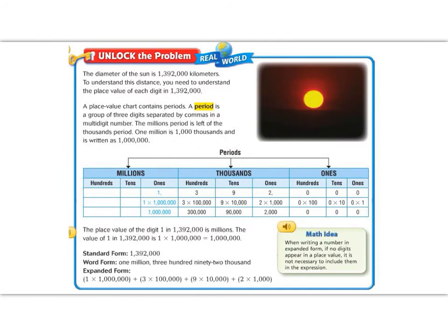Let's continue our flip lesson by opening our math books and looking at the unlock the problem for lesson 1.2. Remember that the flip lessons follow along with the pages in your math book and anything I write, you should write as well. It says the diameter of the sun is 1,392,000 kilometers. To understand this distance, you need to understand the place value of each digit in 1,392,000. A place value chart contains periods. A period is a group of three digits separated by a comma in a multi-digit number. The millions period is to the left of the thousands period.